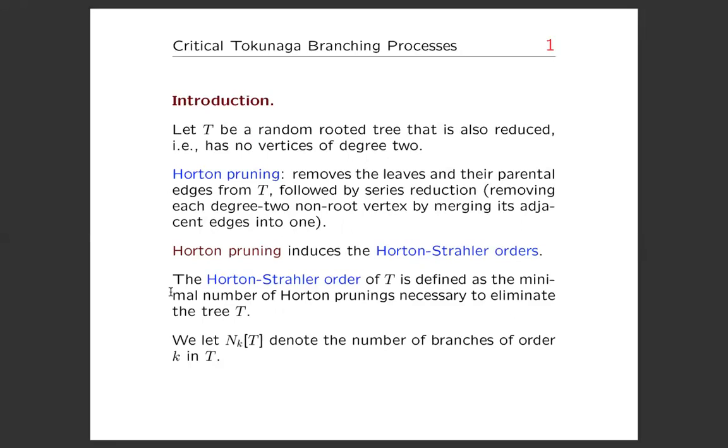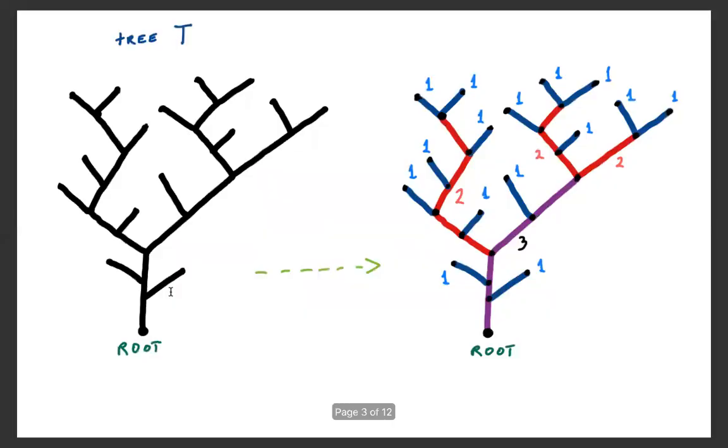Horton pruning induces the Horton-Strahler orders. The Horton-Strahler order of tree T is defined as the minimal number of Horton prunings necessary to eliminate the tree. We let N_k(T) denote the number of branches of order k in the tree.